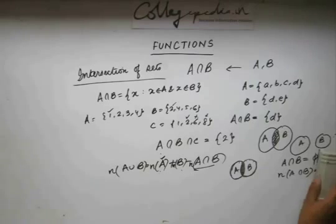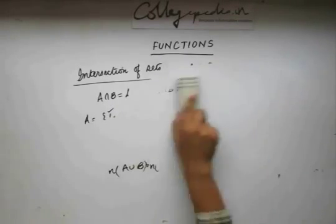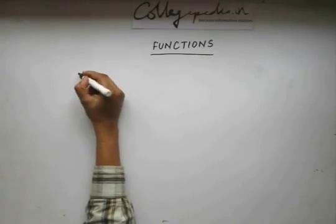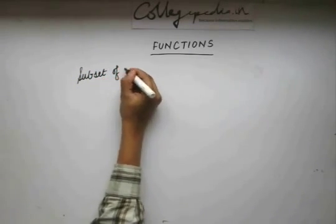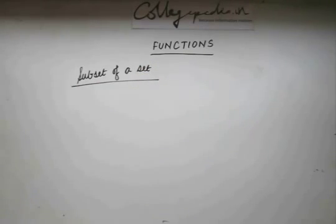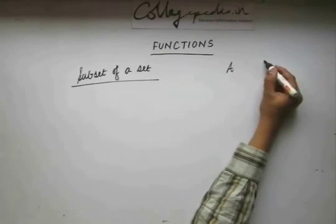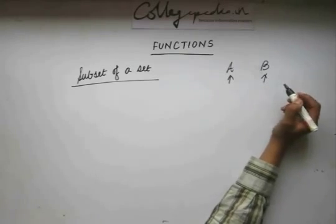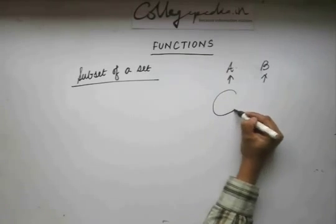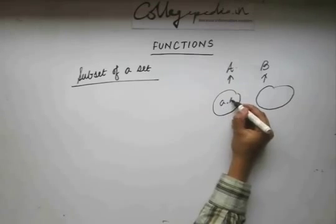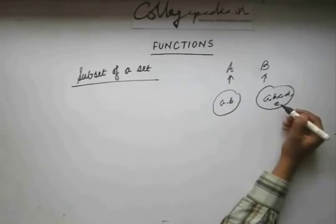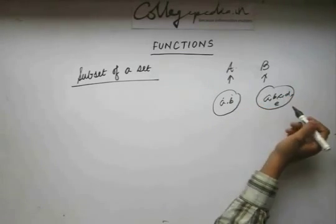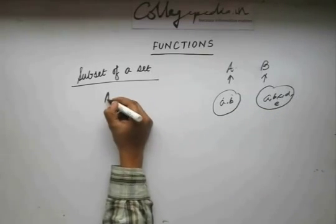We have seen what union and intersection of sets are. Now let's understand what a subset is. Let's say I have sets A and B. Set A is said to be a subset of B if each element of A is also in set B. For example, if A has elements A and B, and B has five elements including A and B, then since every element of A appears in B, A is a subset of B, denoted A ⊆ B.